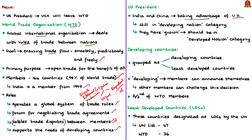The US president also named India and China as examples of countries that had taken advantage of the United States. He blamed that India, China and many other countries still consider themselves as developing nations and are taking advantage of the USA. He commented that these countries have grown now and should be in the developed nation category. The US president also directed the office of the United States Trade Representative (USTR) to convince the WTO to rethink its classification of developing countries.